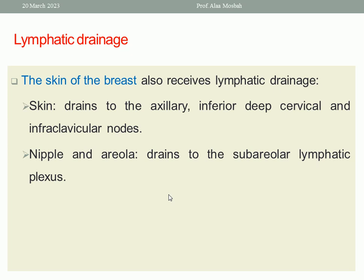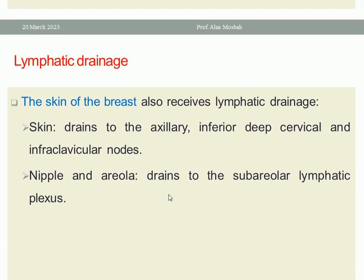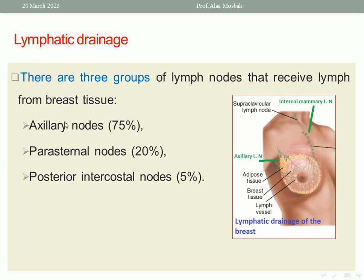The skin of the breast also receives lymphatic drainage. The skin drains to the axillary, inferior deep cervical, and infraclavicular nodes. The nipple and the areola drain to the subareolar lymphatic plexus. The axillary lymph nodes can be classified as apical, central, anterior, posterior, and lateral.